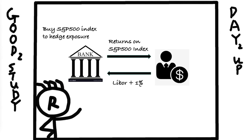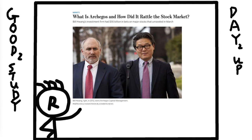Alternatively, the bank can go to another bank and enter the exact same total return swap to offset this one. You may have heard about this: Archegos Capital Management defaulted in March 2021. The founder of Archegos Capital bet heavily on certain stocks using TRS and was super leveraged. If his bet went well he would have made a lot of money, but the market went against him — Bloomberg News reported that he lost 20 billion dollars in just two days because he was over-leveraged.